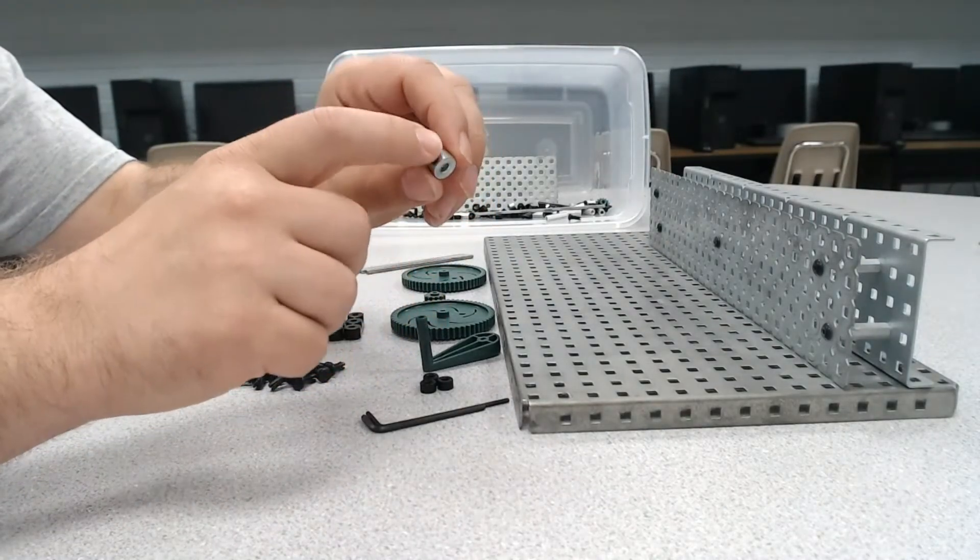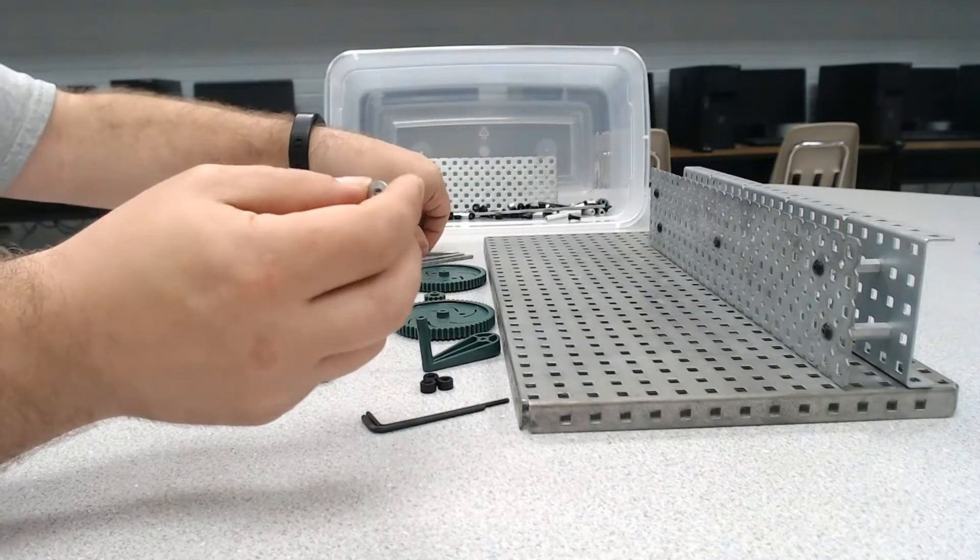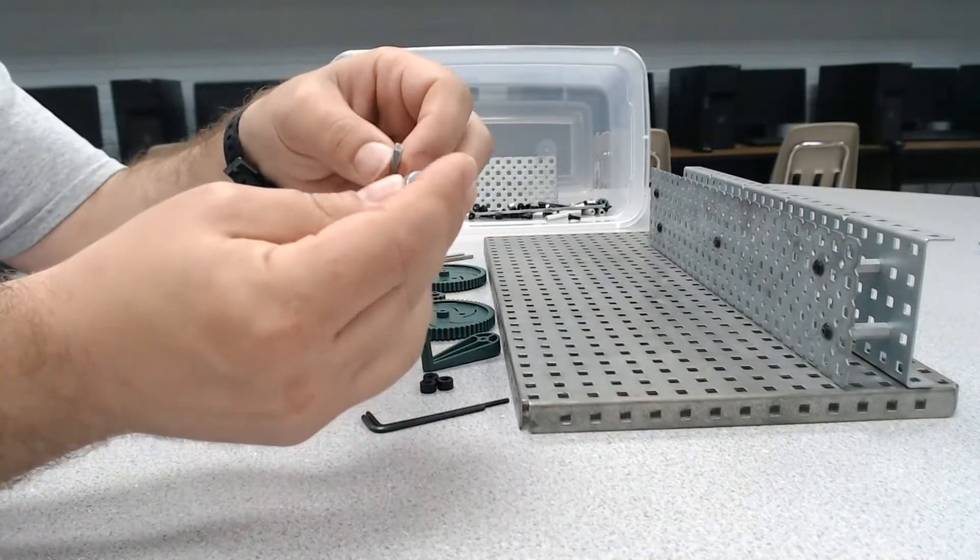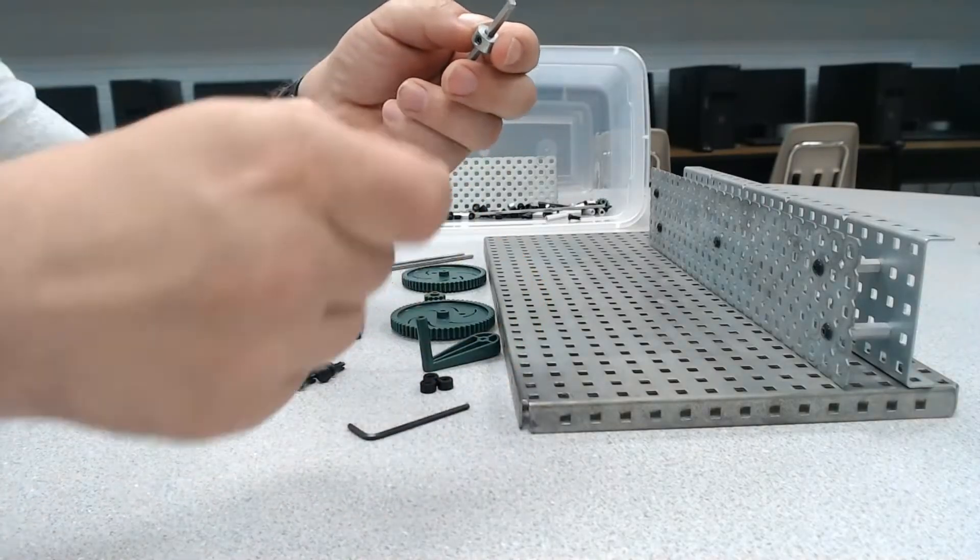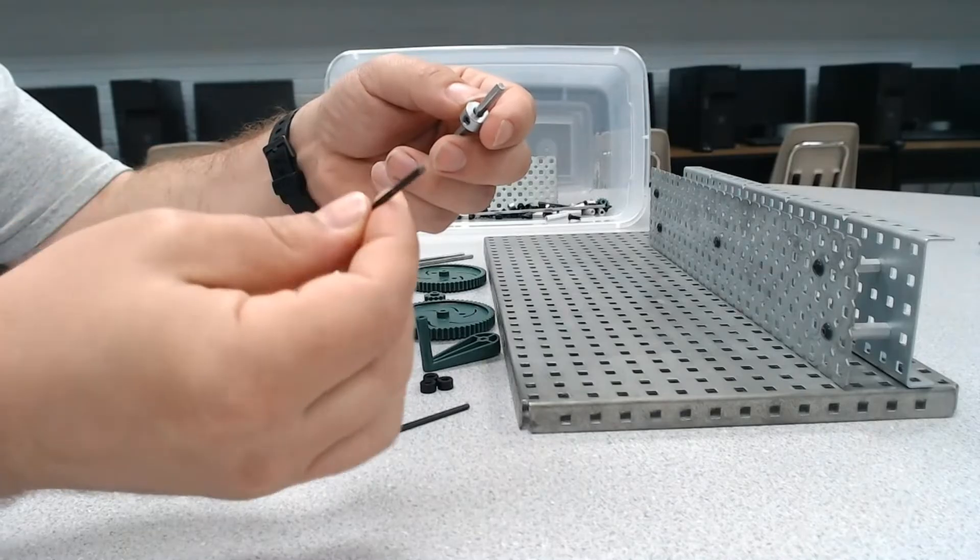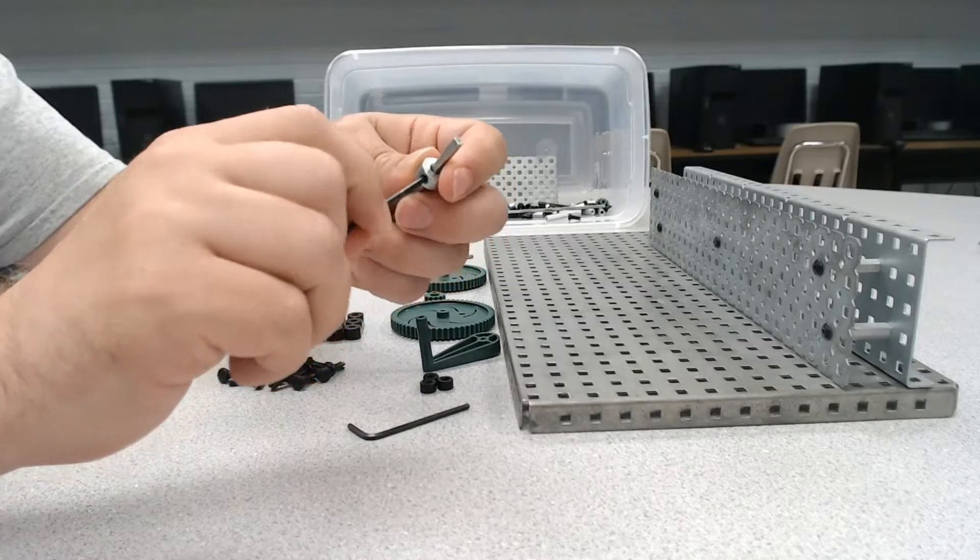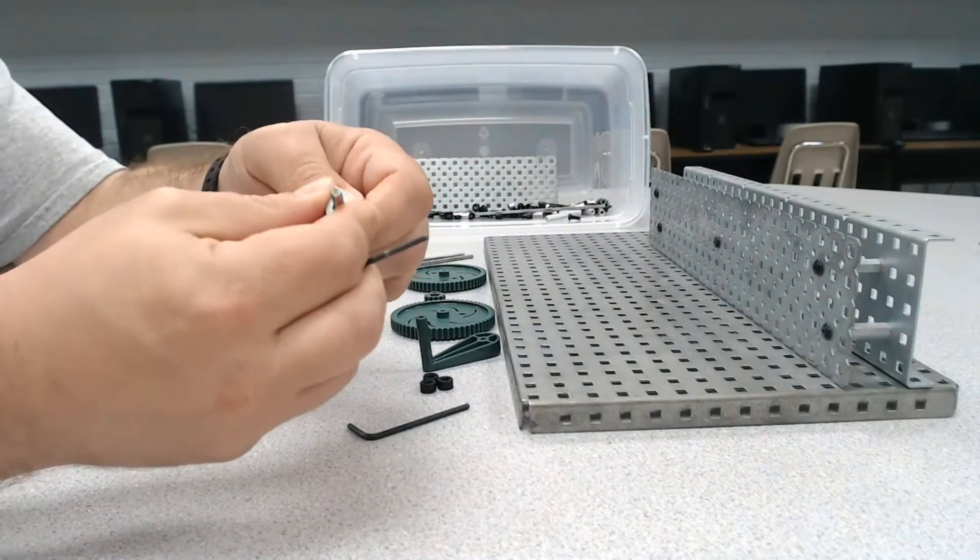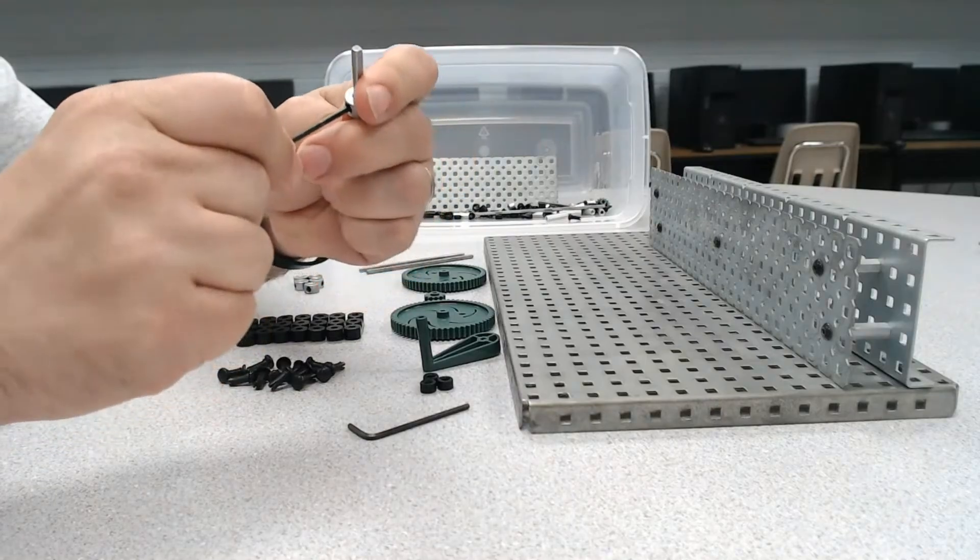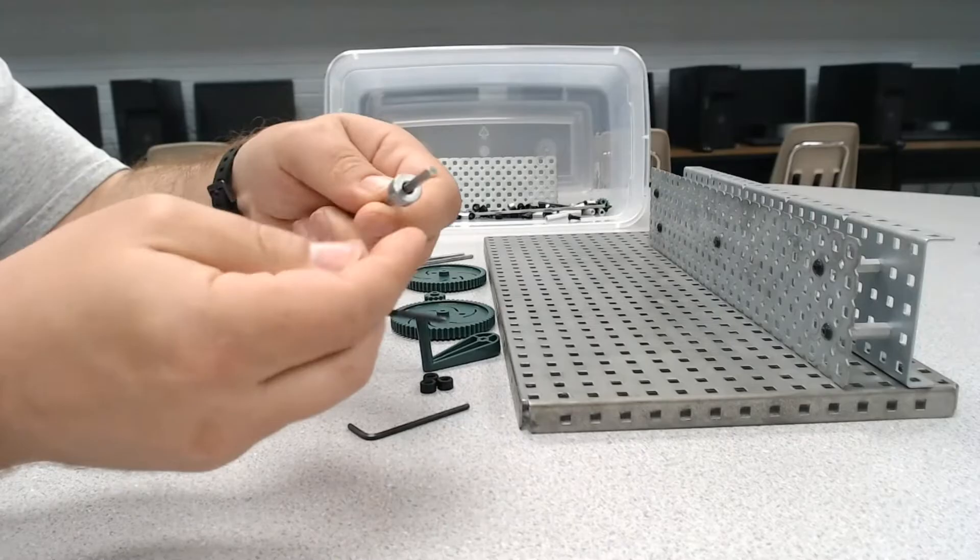Locking collars come in two varieties. One is this metal kind, the older style. The way this works is you would run an axle through the locking collar, and then I'm going to take a 5/64 hex wrench and tighten that set screw down. Once tightened correctly, this will not move around on the axle, hence the name locking collar.